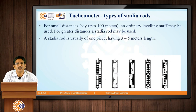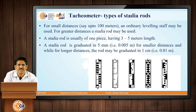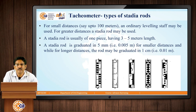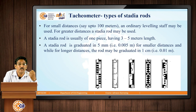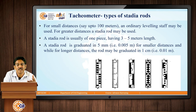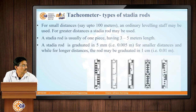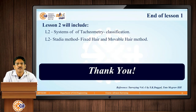These are some stadia rods which are commonly used. Stadia rods are like leveling staffs but slightly different. As you can see in the pictures, they have black and white engravings which prominently highlight their features, useful when looking at a leveling staff from very long distances — say 500 meters, 1 kilometer, or even 2 kilometers — where normal leveling staffs may not be discernible. These stadia rods are very useful for that purpose. This brings us to the end of the lesson on basics of tachymetry.